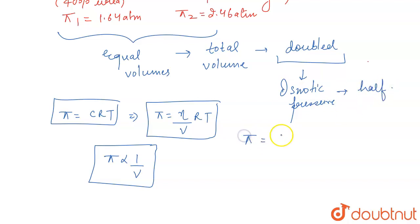So, the osmotic pressure π becomes π1 plus π2 divided by 2. That is 1.64 plus 2.46 divided by 2, which is equal to 2.05 atm.